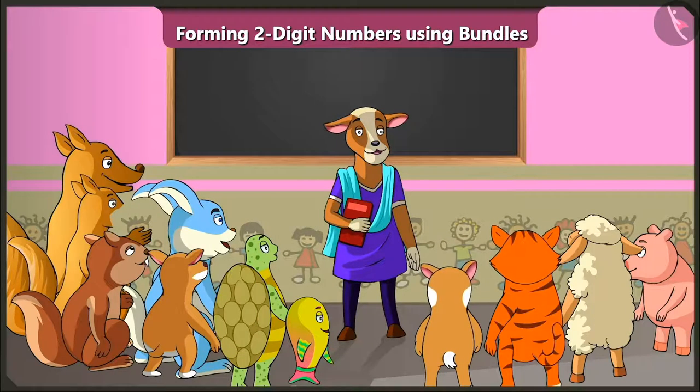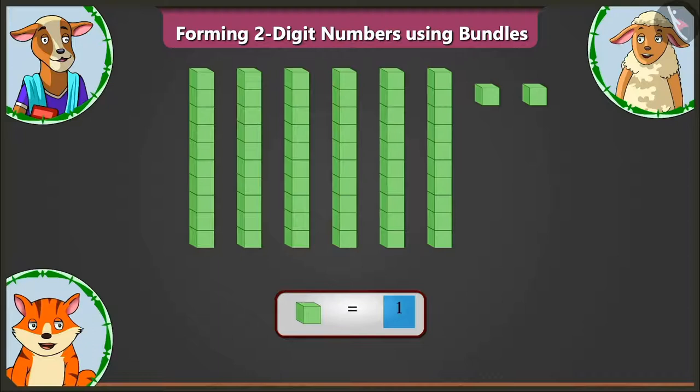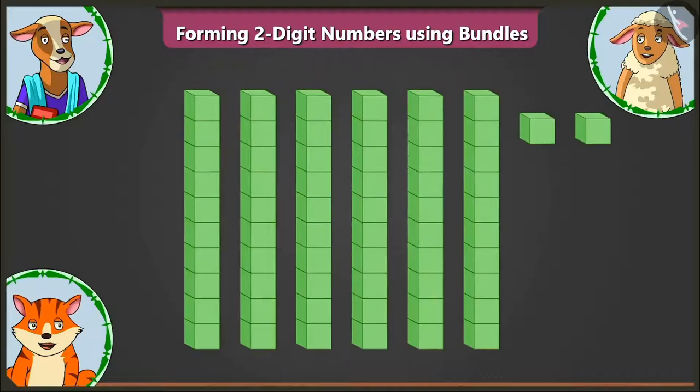Now, let us look at the second example. Look, Billy. Here, we have to count one small block as one. Now, tell me, what number do all these blocks represent?